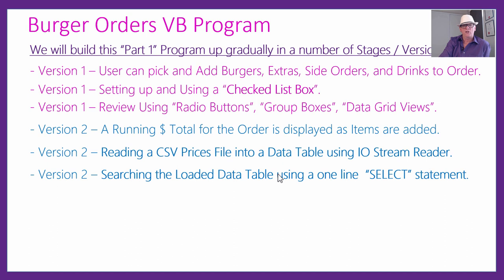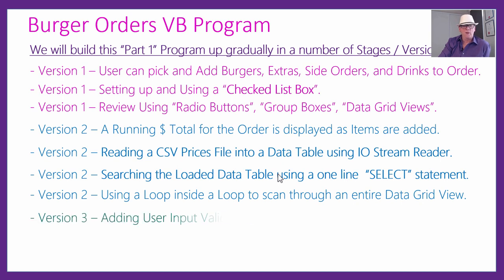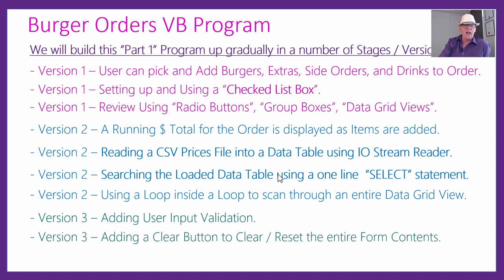Once the prices are loaded into the data table, we can search through for each of those two-character item codes and find out what the price is for each one, adding them up until we've got a total for that particular order. We'll be using a loop inside a loop to scan through the entire data grid view — we've done that in previous lessons. Of course, we need to add user input validation, and we're going to add a clear button so that once you've done an order, you can start a new order for the next customer.